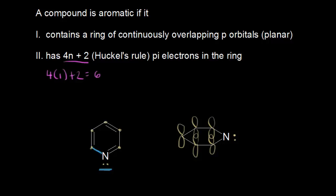For the nitrogen in pyridine, we have one sigma bond here, one sigma bond here, and one lone pair of electrons on the nitrogen. So the steric number equals the number of sigma bonds, which is two, plus the number of lone pairs, which is one — giving a steric number of three. Three hybrid orbitals means this nitrogen is sp2 hybridized. It has three sp2 hybrid orbitals and therefore one unhybridized p orbital. So we can sketch in the p orbital on that nitrogen.